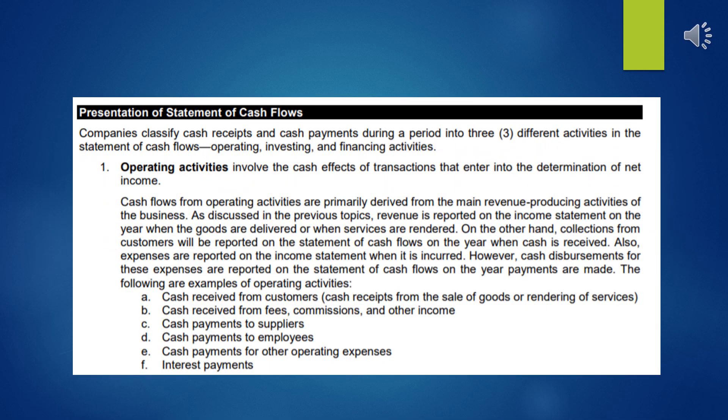We are now on the presentation of the statement of cash flows. Companies classify cash receipts and cash payments during the period into three different activities: operating, investing, and financing activities. This is the first step in making your statement of cash flows — you need to identify and classify your cash inflows and outflows into these different categories.